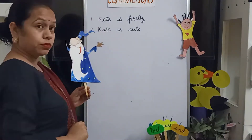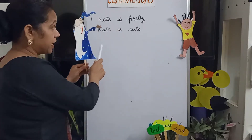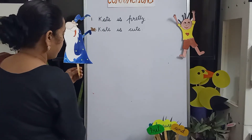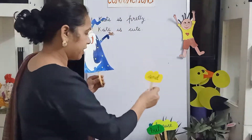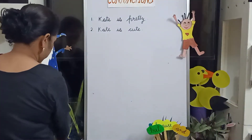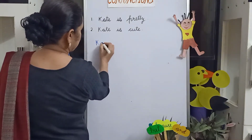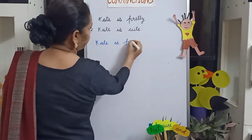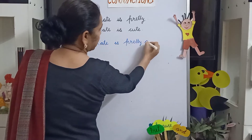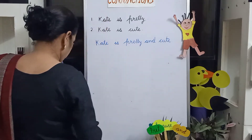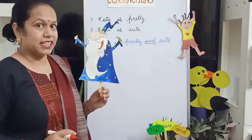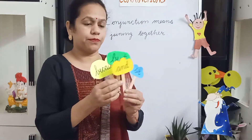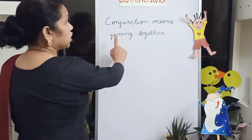So let's take some examples. The magician has to join these two sentences: 'Kate is pretty' and 'Kate is cute.' He saw the words, and with the help of his magic, he used the magic word 'and' and joined these two sentences. In English, these magic words are known as Conjunction.